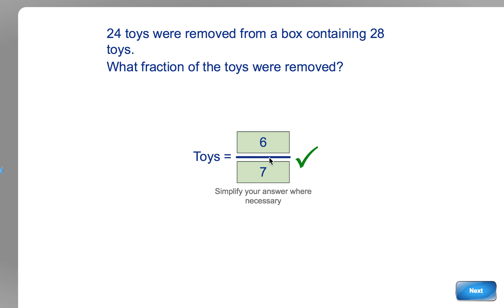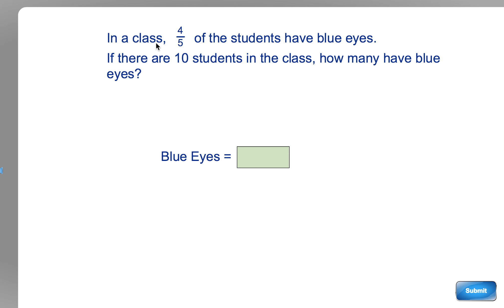What else have we got here? In a class, four-fifths of the students have blue eyes. If there are 10 in the class, how many have blue eyes? So four out of five have blue eyes, and there are 10 in total. So if four out of every five have blue eyes, how many will that be out of 10?